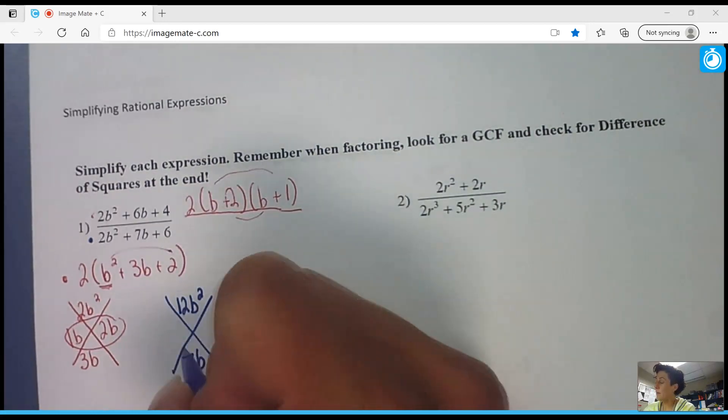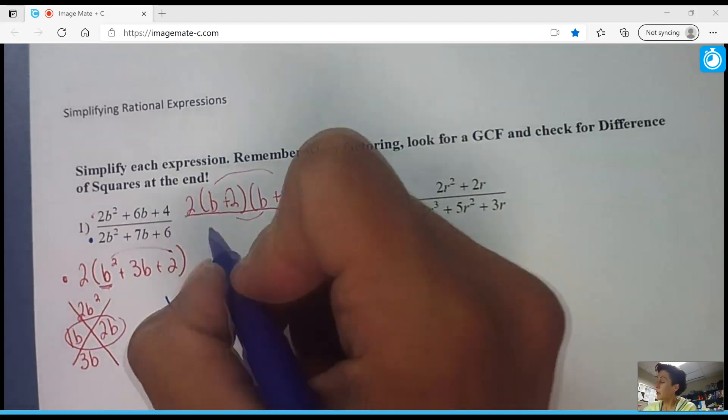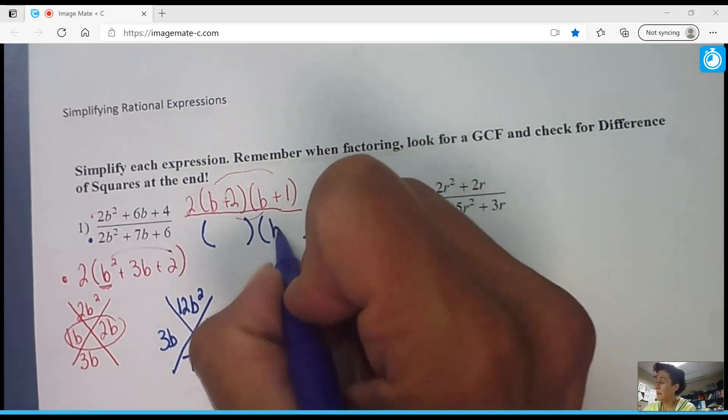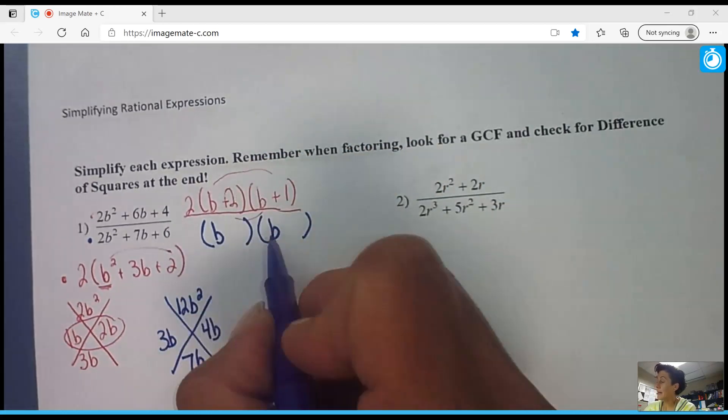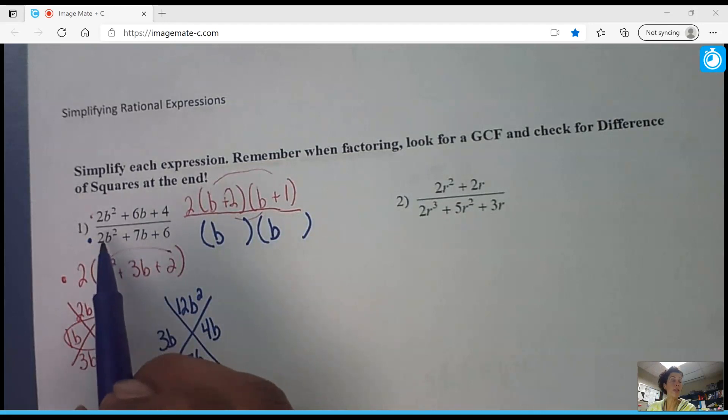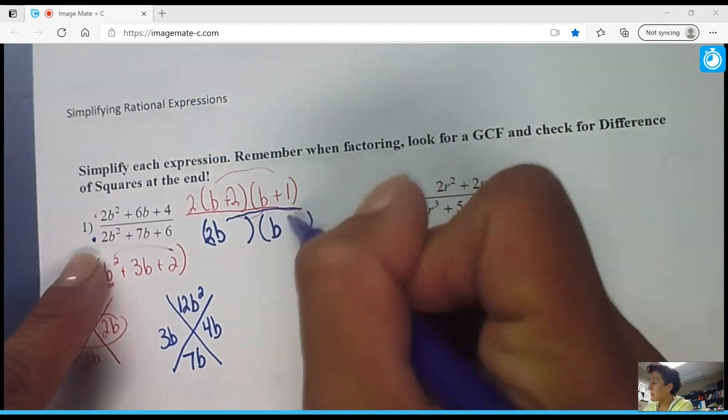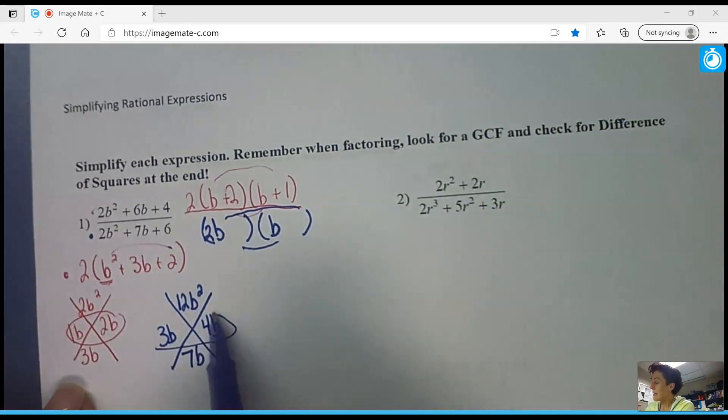The factors of 12 that get me to 7 will be 3 and 4. So I'm going to go ahead and go up to my parentheses. I'm going to drop those b's in. And then is b times b enough? It's not. I need 2b squared, and b times b is b squared. So I'm going to have to put a 2 with one of those. And now I'm going to make my loops to get these side numbers.